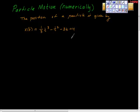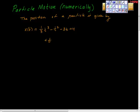Here's a question from the AP Calculus exam on particle motion, solving it numerically. The position of a particle moving along a horizontal line, along the x-axis, is given by x(t) = (1/3)t³ - t² - 3t + 4. What I'm interested in finding out is how far does the particle travel in the first 6 seconds, for t between 0 and 6.